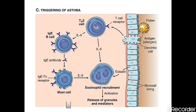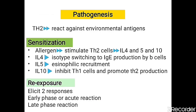After sensitization, IgE antibodies are produced and bind to mast cells, which reside in the epithelial cells and lamina propria — making them ready for the next allergen exposure. Interleukin-10 inhibits T helper 1 cells so that T helper 2 cells are promoted. T helper 1 cells normally inhibit T helper 2 cells, but this inhibition is suppressed.